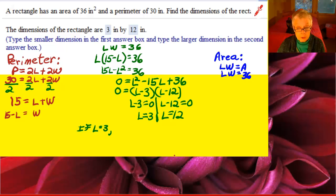If L equals 3, then I'll use the area formula. Substitute 3 for L. I'll have 3 times W equals 36, so W equals 12.